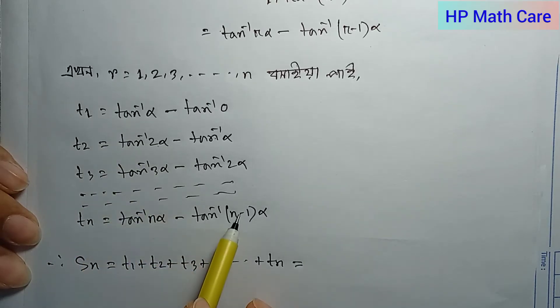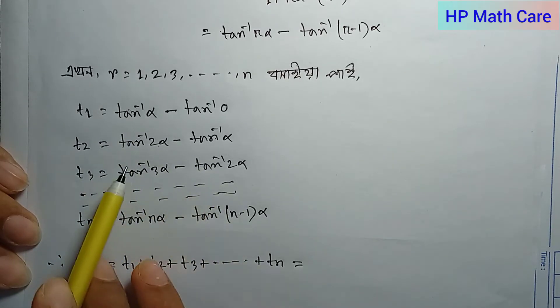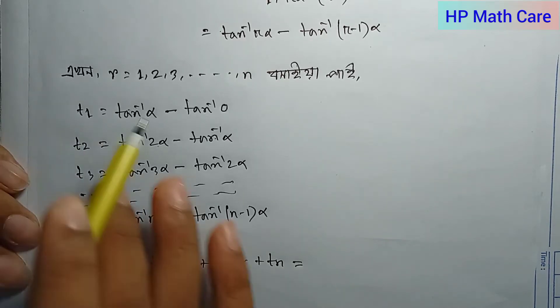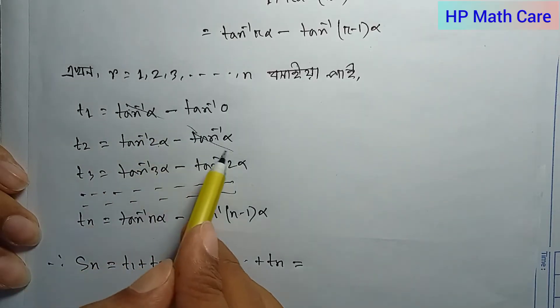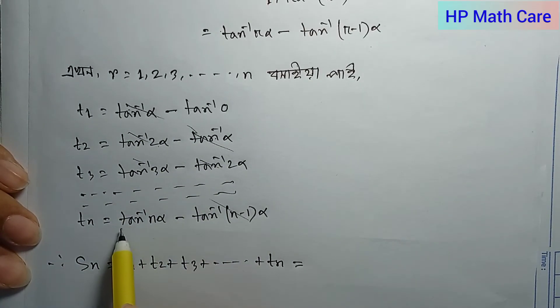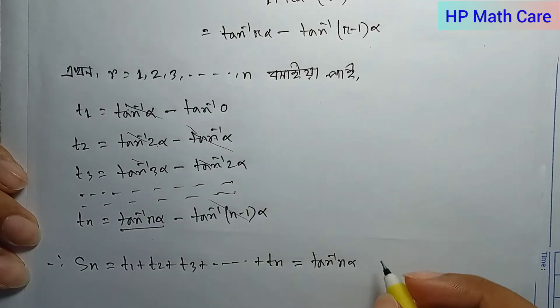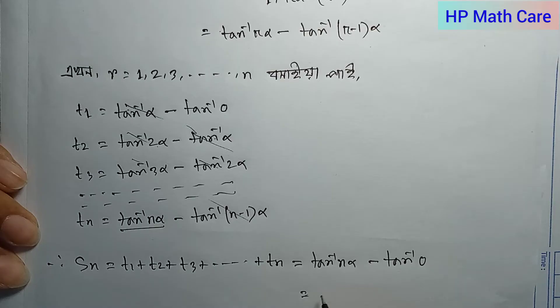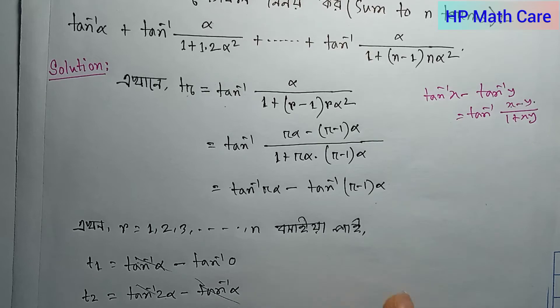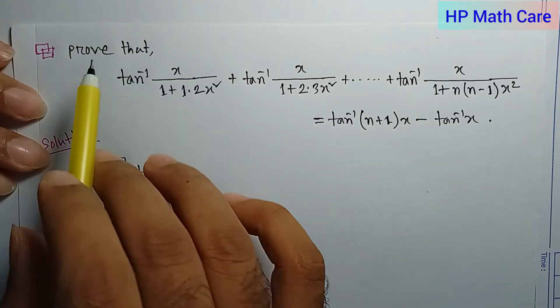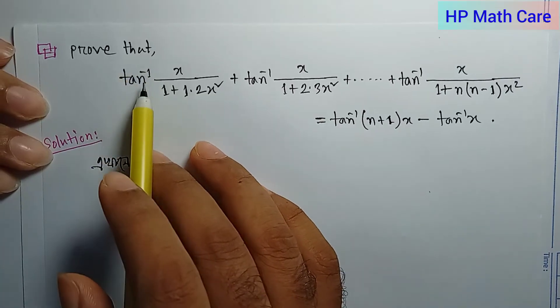After cancellation, the final sum equals tan⁻¹(n·alpha) minus tan⁻¹(0). Since tan⁻¹(0) equals zero, the sum equals tan⁻¹(n·alpha). Now let us prove a specific example problem using this approach.